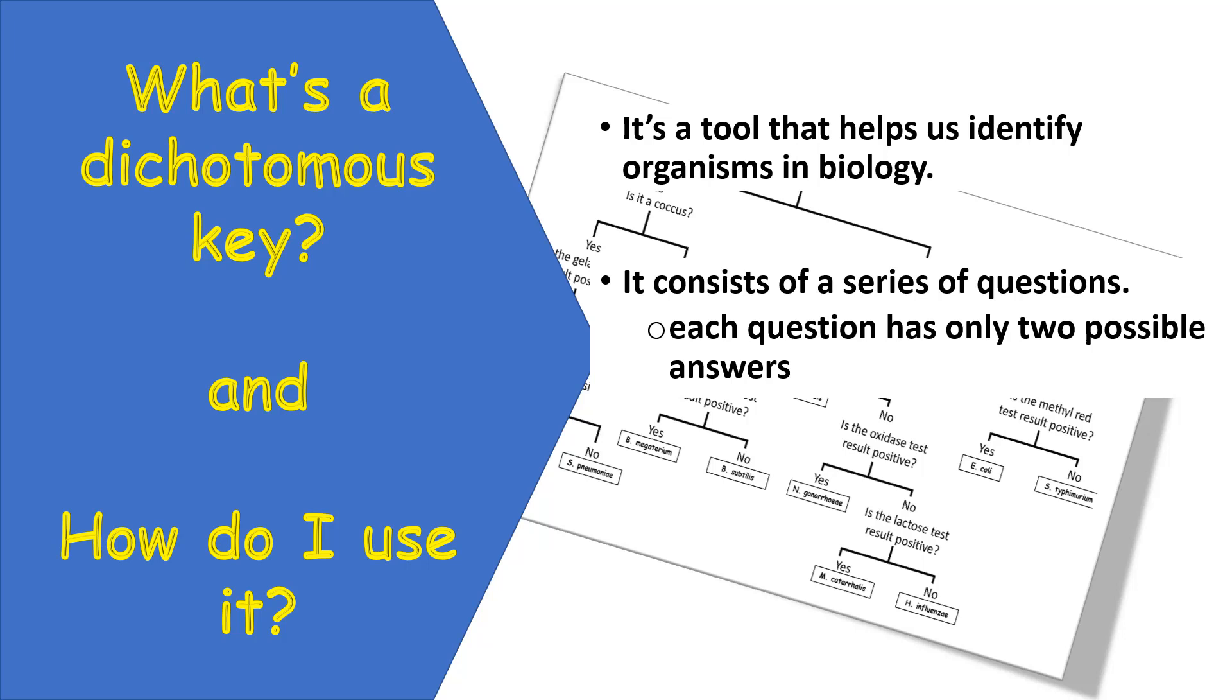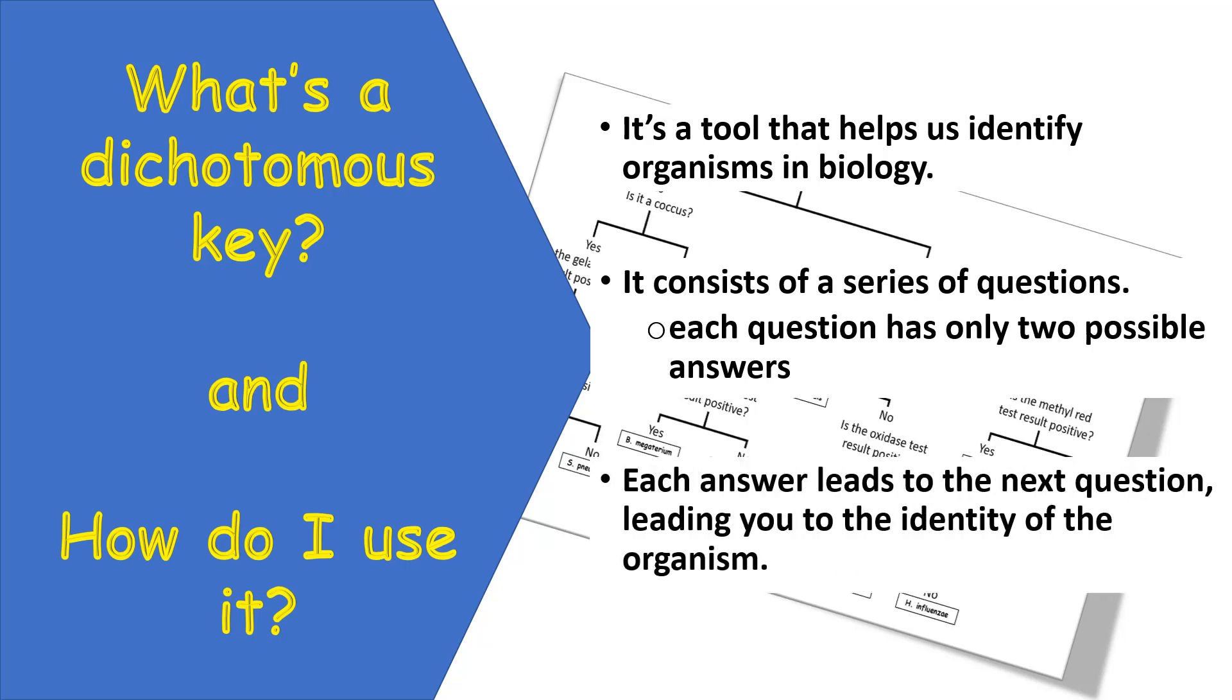Each of these questions will basically have a yes or no answer to them. Thus, there's only two possible answers for each question. Generally, you'll start with the question at the top of your key and you'll work your way downwards. Your answer to the first question will then lead you to the next question that will also have a possible two answers and so on and so forth. And at the end, your answers will lead you to the identity of your unknown organism.